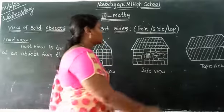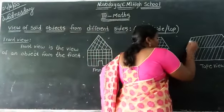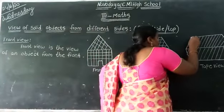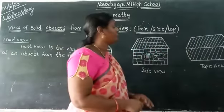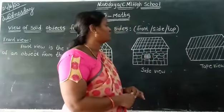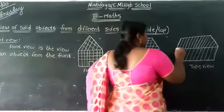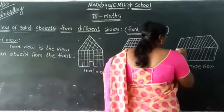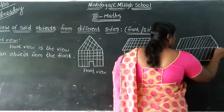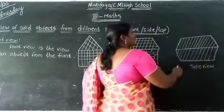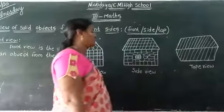And next, top view. Top view is the view of an object from the top. This is the roof of the house, so this is what the top view of the house looks like.